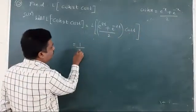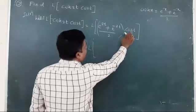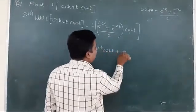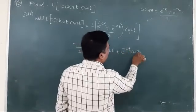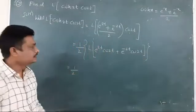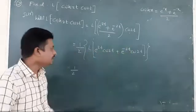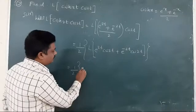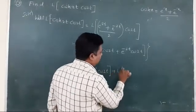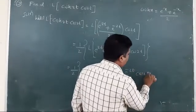Taking 1 upon 2 outside the Laplace sign and multiplying cos 2t into both terms, it becomes 1 upon 2 times L of [e to the power of 2t times cos 2t plus e to the power of minus 2t times cos 2t]. Applying linearity, this is 1 upon 2 times [L of e to the power of 2t cos 2t plus L of e to the power of minus 2t cos 2t].